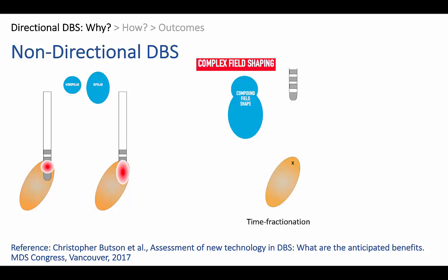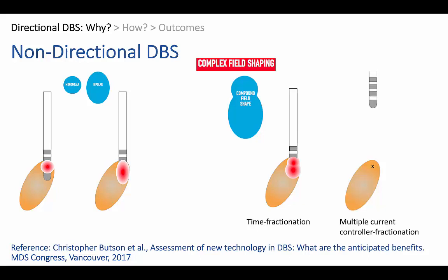We do this through two technologies. One is fractionation of these fields in time, which is similar to Medtronic's interleaving protocol. So you have two different programs running alternately at a very high frequency — 125 Hz — and that effectively produces that complex field shape that you desire. The second and newer technology is multiple independent current controllers, where you can have completely different programs on two separate contacts, fractionating current between those two contacts to produce a similar field shape. The advantage being that because you're not time fractionating, frequency is opened up as an extra parameter.